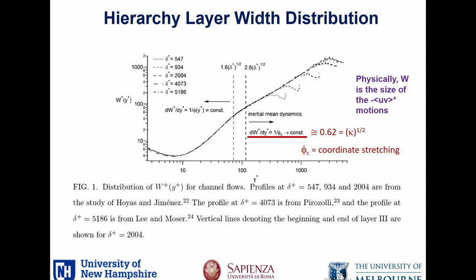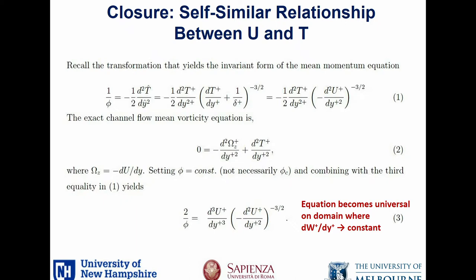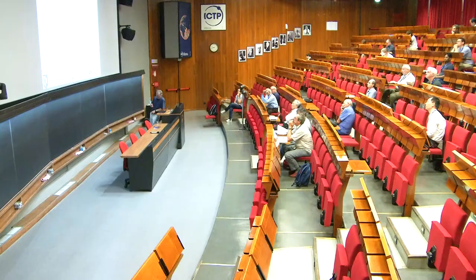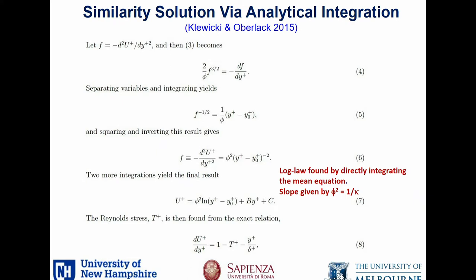You can show this by going back to the equation for A — which is related to phi, the stretching coefficient — and converting back to plus variables, then invoking the vorticity equation for the channel flow, which is exact here. You get a single nonlinear equation for the mean velocity that holds on the inertial domain where the length scale distribution approaches a linear function. With help from Martin Oberloch, you can separate variables and integrate — squaring and inverting, then integrating two more times — and you get a log law. So we've shown that for this self-similarity, you can transform the equations, integrate, and get a log law, and the slope coefficient is the stretching coefficient squared, giving an alternate way of evaluating the von Karman constant.